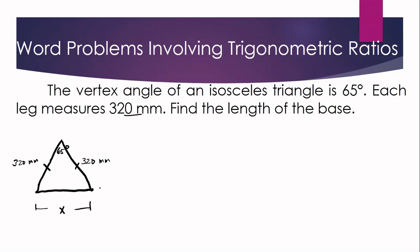To use the trigonometric ratio, we need a right triangle. This isosceles triangle is not a right triangle, so we draw an altitude to create one. The altitude is perpendicular, giving us a 90-degree angle, so we now have a right triangle and can apply the trigonometric ratio.